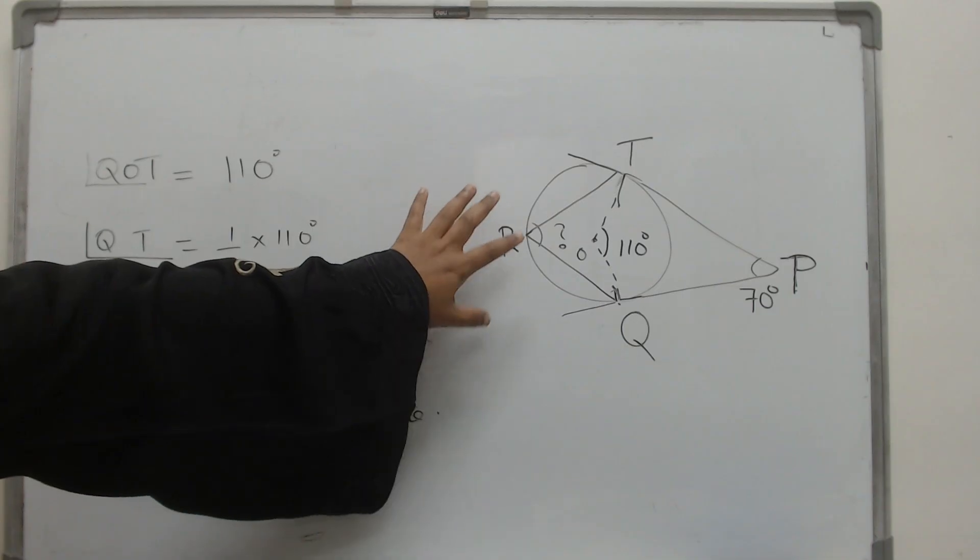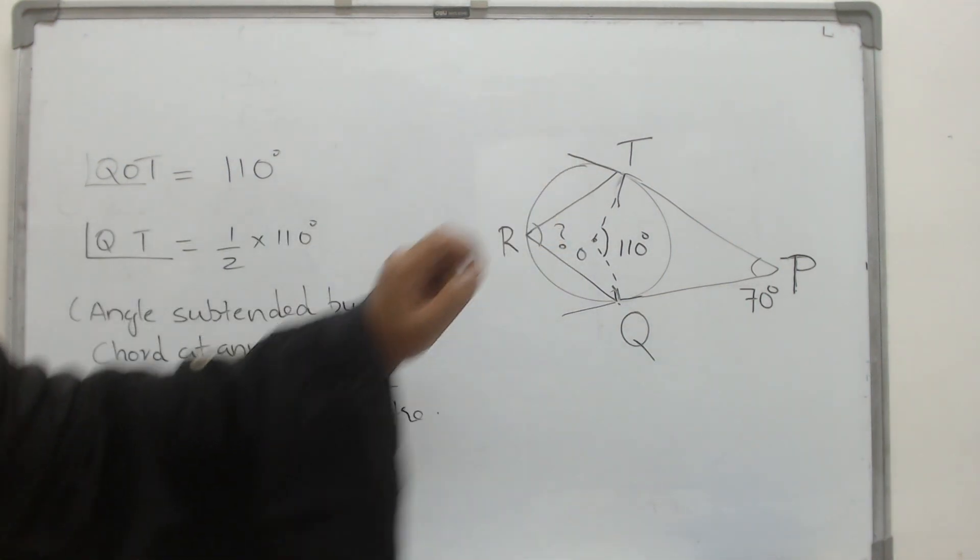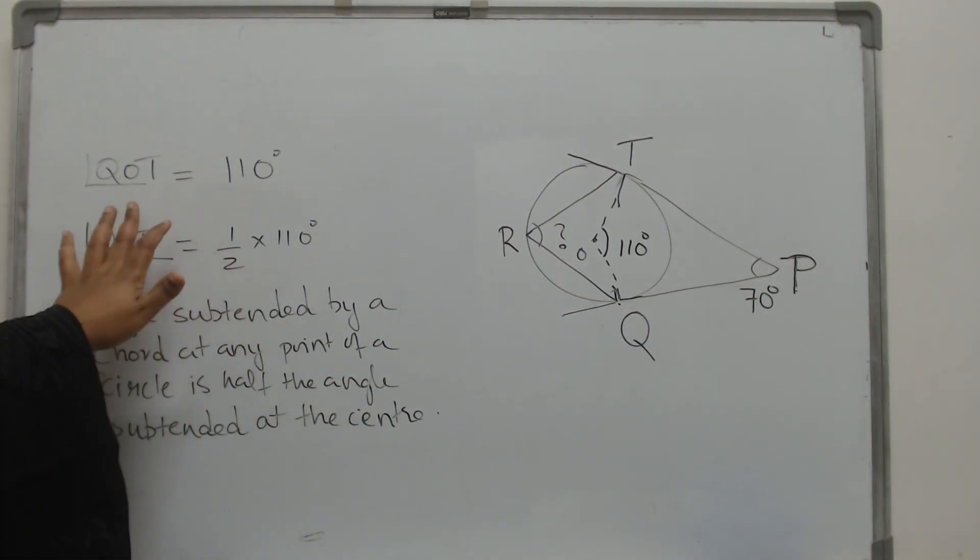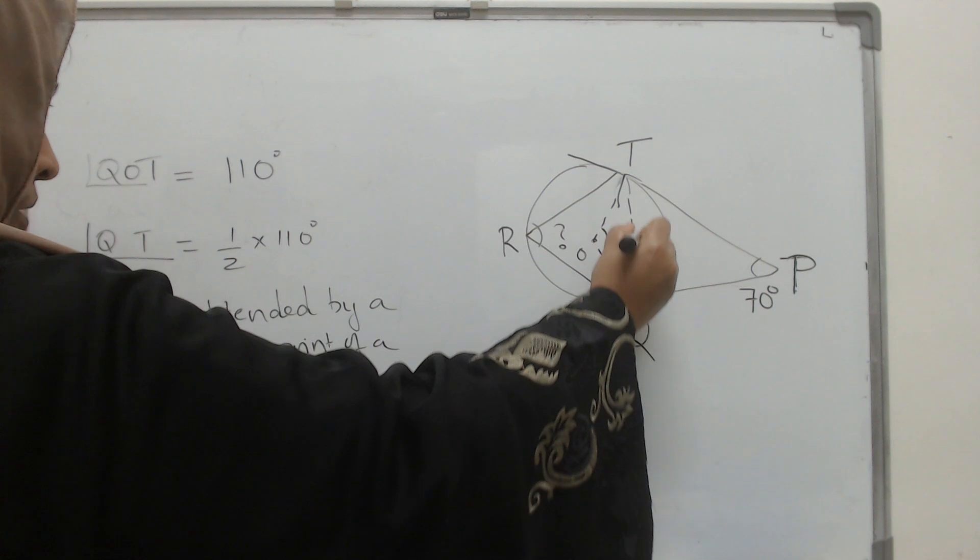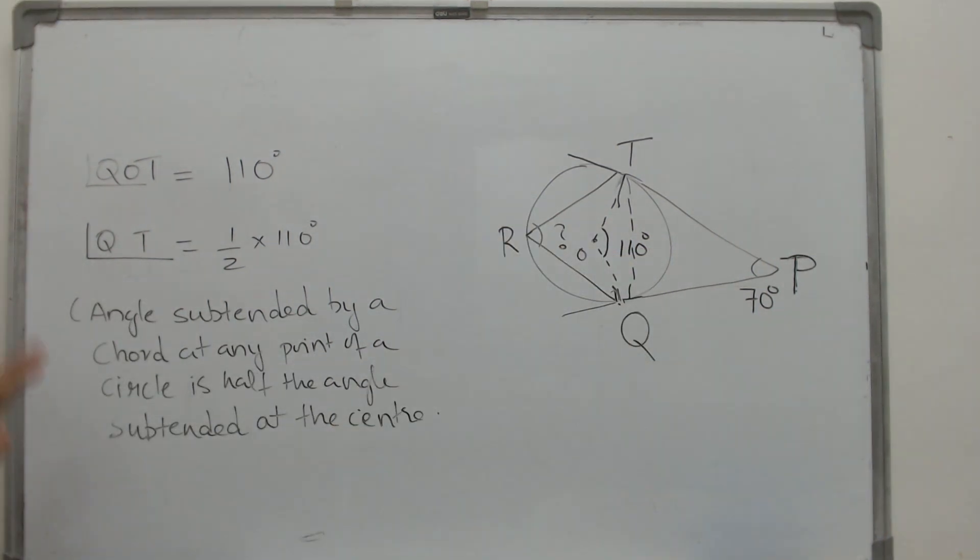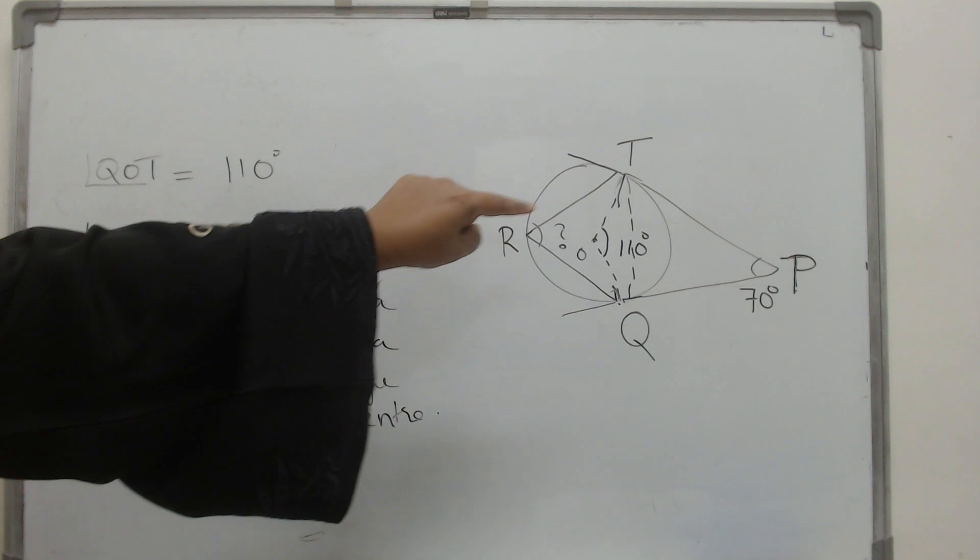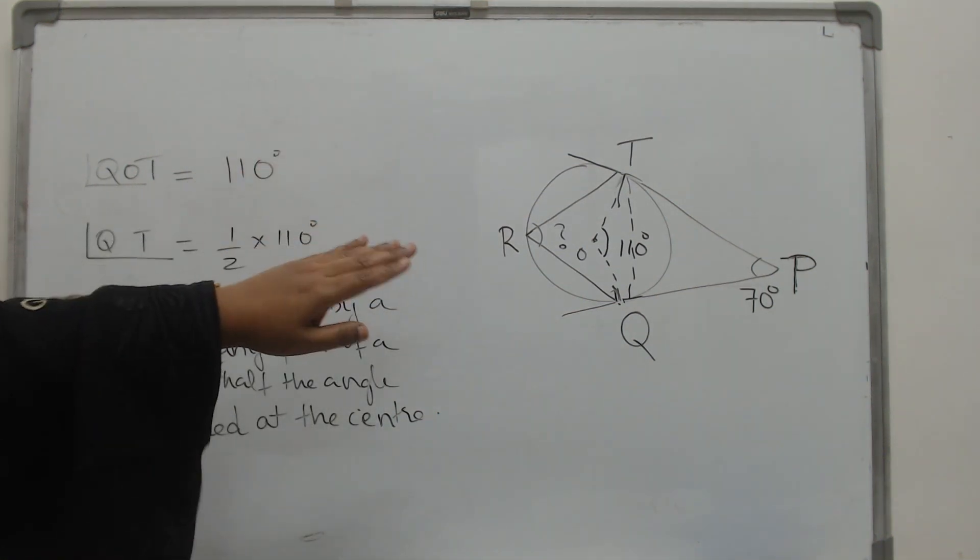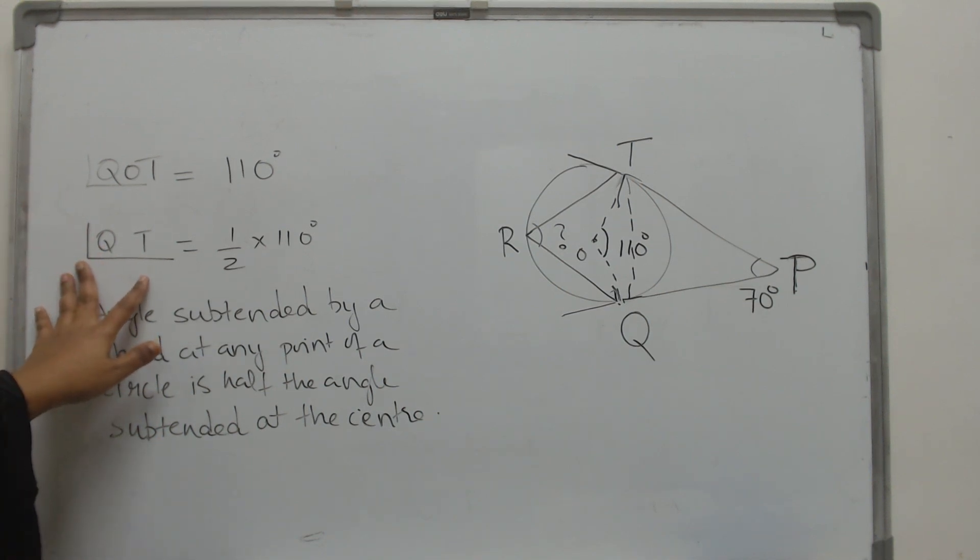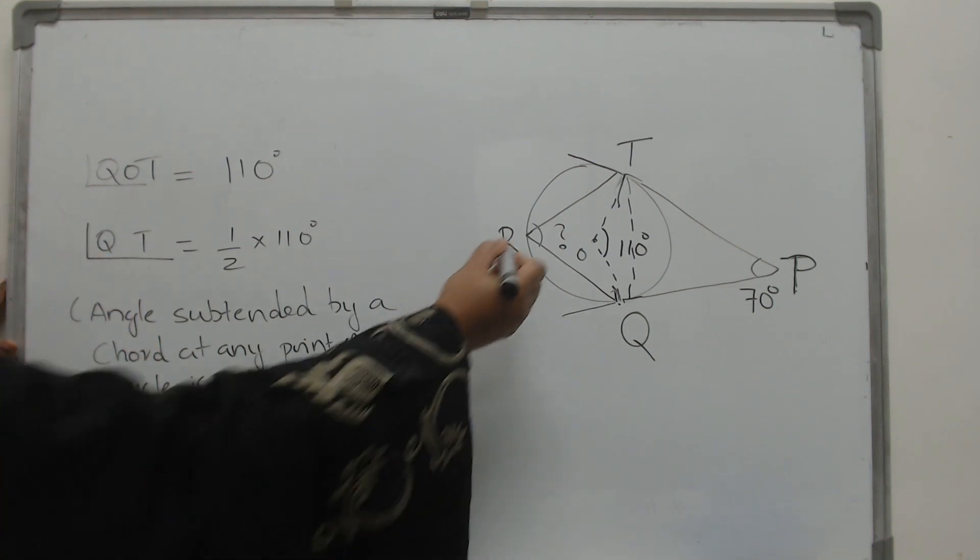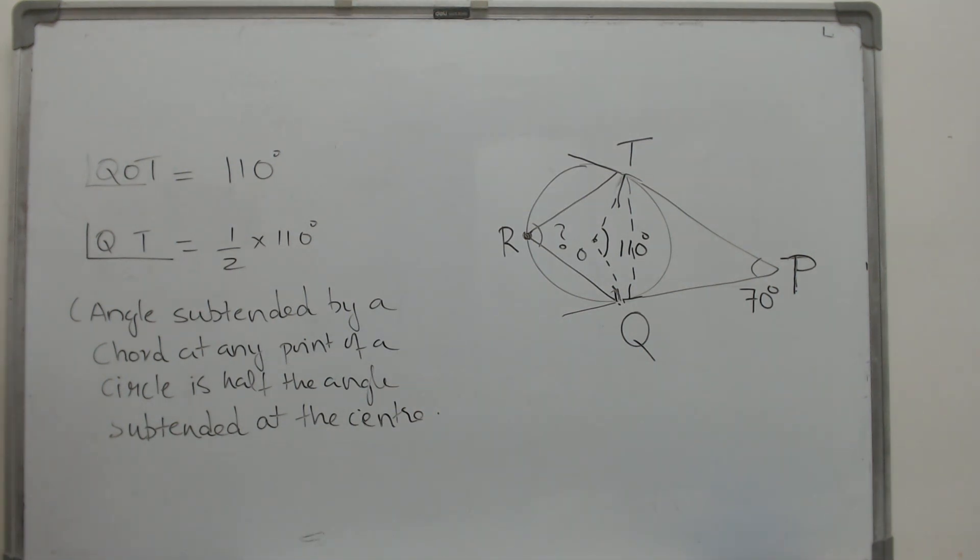We have proof that angle QOT is 110 degrees or in other words, the angle subtended by the chord QT. If you consider the chord QT, the angle subtended by the chord QT at the center is 110 degrees which means the angle subtended by QT at any other point on the circle will be half of that.